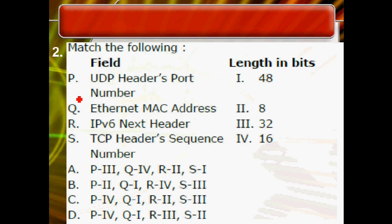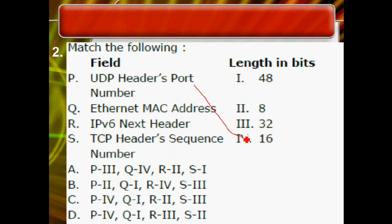The second question is a match-the-following. UDP headers use port numbers for service point addressing, which uniquely identifies a process. For TCP and UDP, the port number size is 16 bits. Ethernet at the data link layer uses MAC addresses, which uniquely identify a node in the network. MAC addresses are in hexadecimal format and are 6 bytes, which is 48 bits.